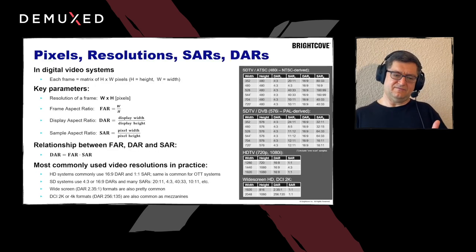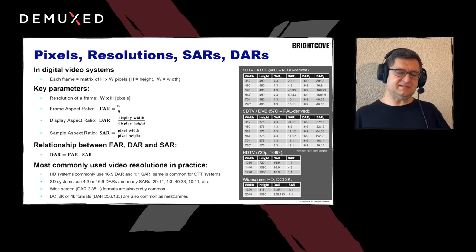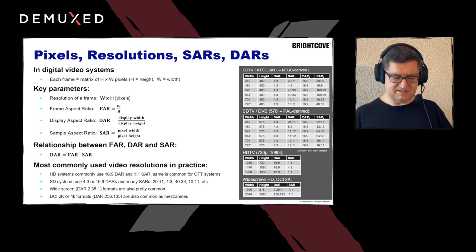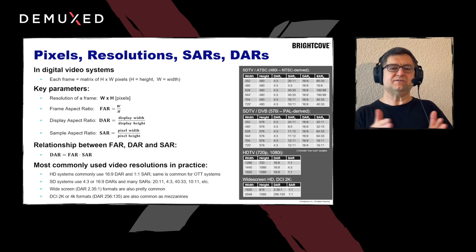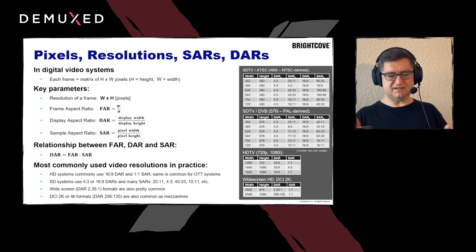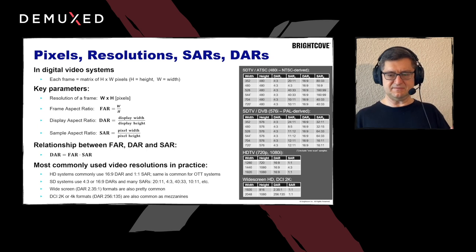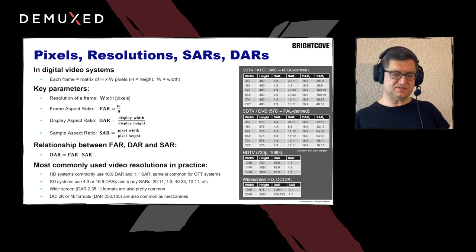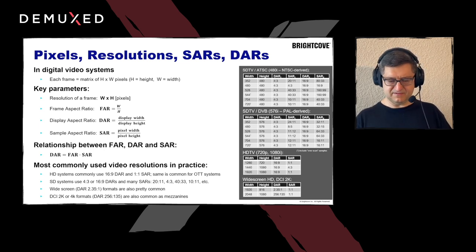Moving into fully digital representation, each frame is now a matrix of pixels. But those pixels don't necessarily have to be square. First-generation television systems — standard definition ATSC and DVB — were defined with six different sampling rates at which a line could be sampled, from 352 pixels up to 720. The width of each pixel could therefore be different, creating the concept of SAR (sample aspect ratio). Display aspect ratios also differed: early systems used 4:3, while HD introduced 16:9. When 16:9 was introduced for HD, SD systems were also retrofitted to support it, creating a whole chain of different SARs, DARs, and — with widescreen cinema content — even more varieties.